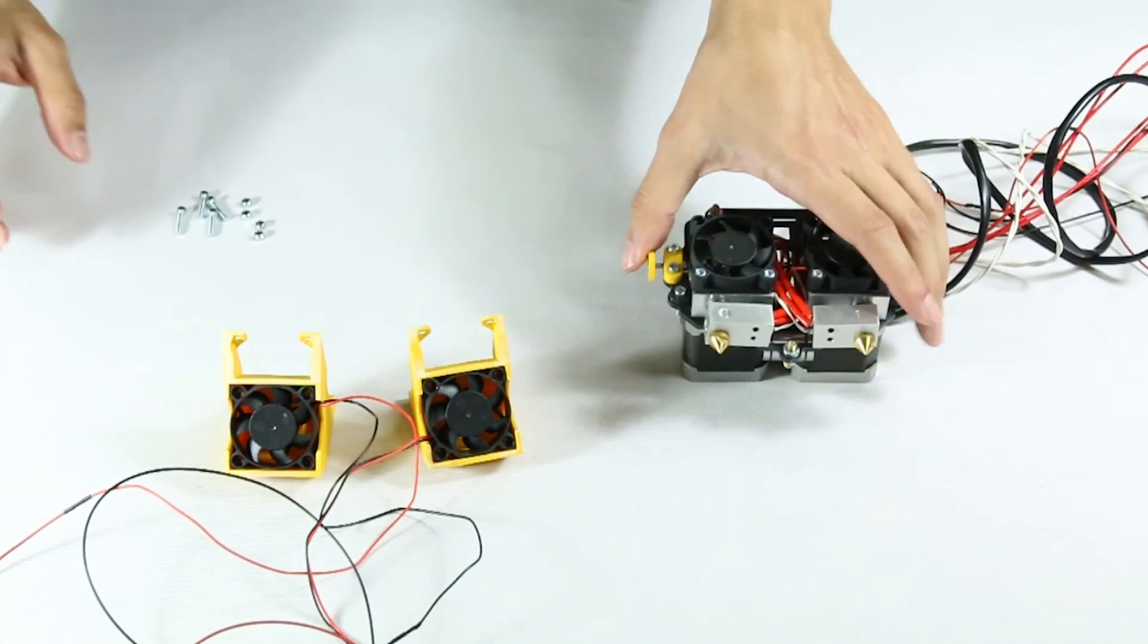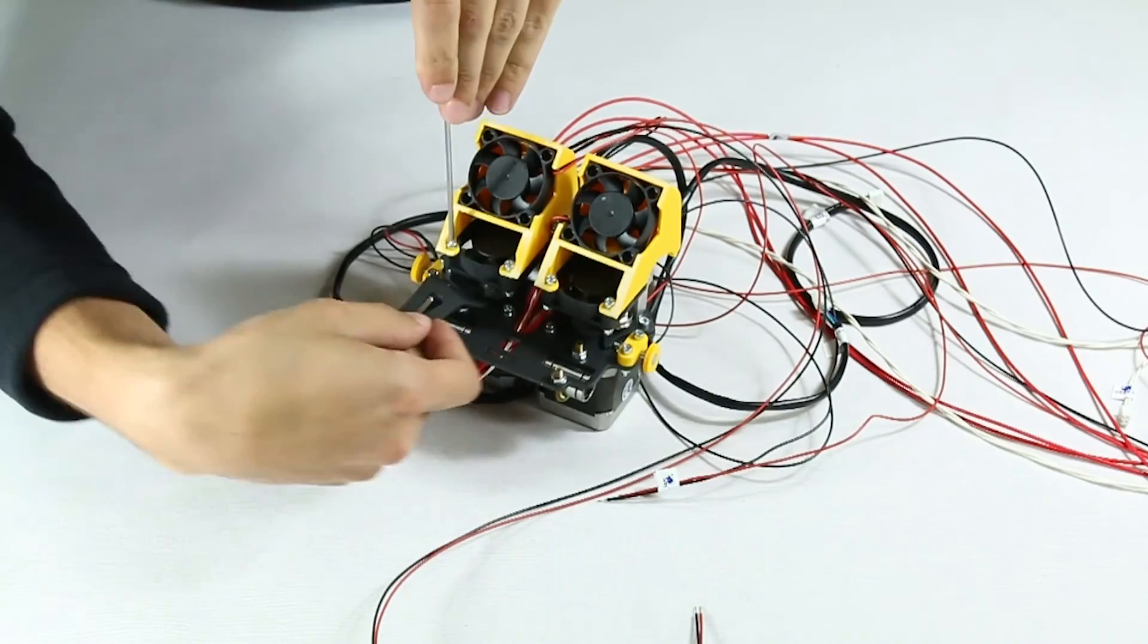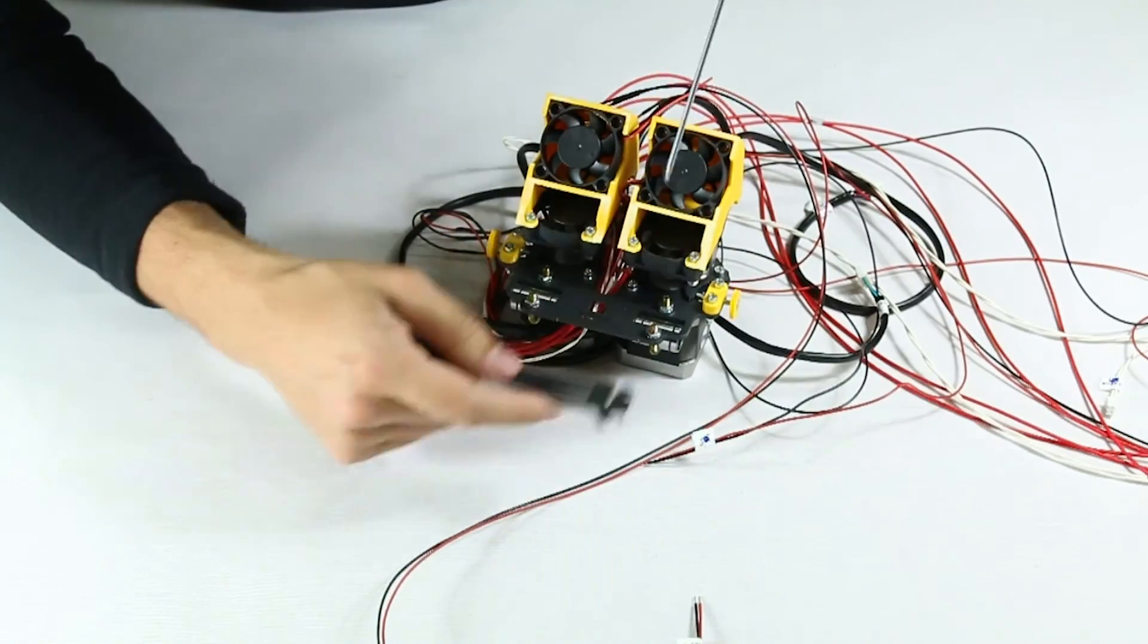Once you've done this, screw it onto the assembled set. Don't tighten too hard, so as not to damage the printed blower housing. And careful not to rest the assembled unit on top of the nozzles.